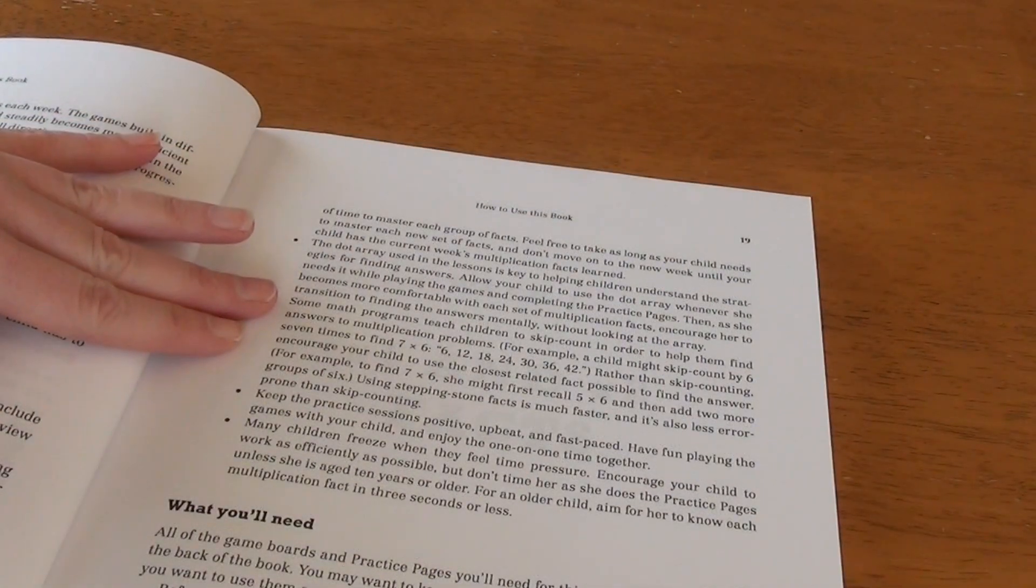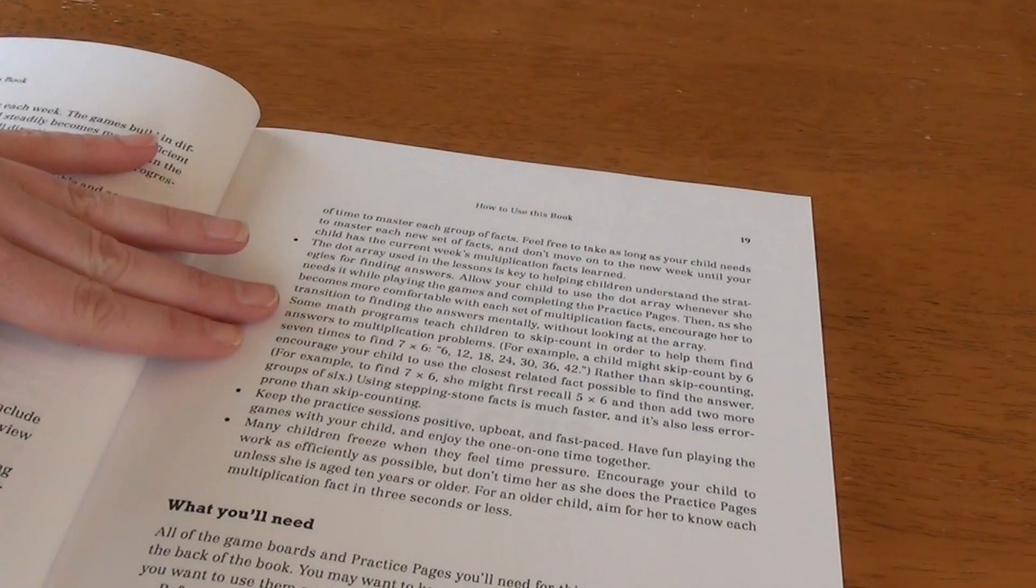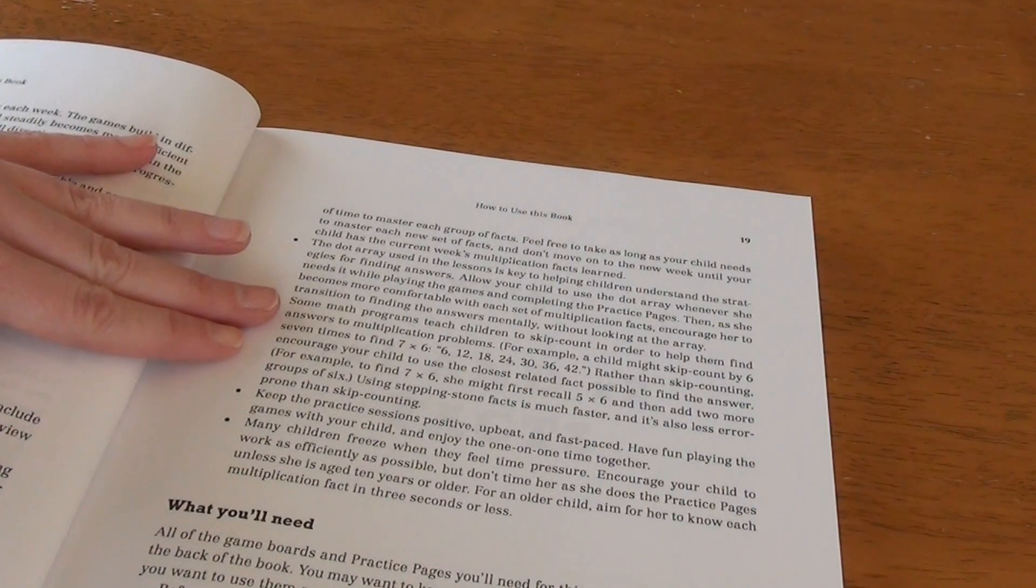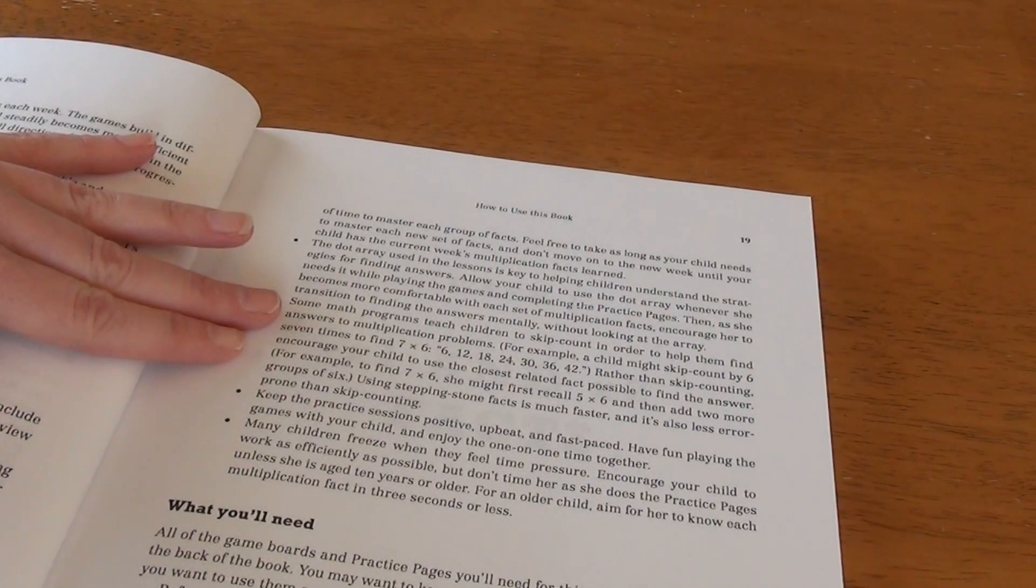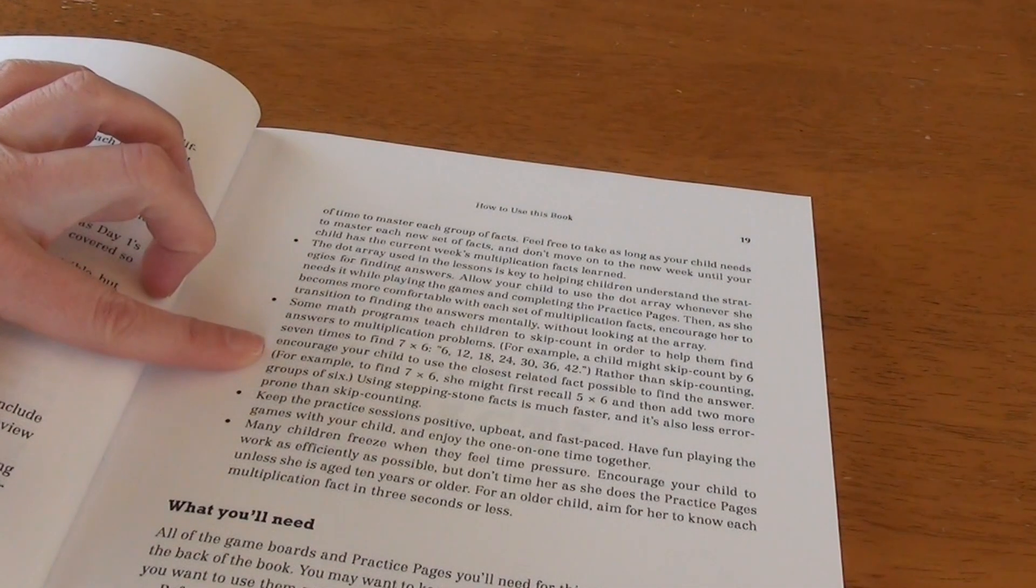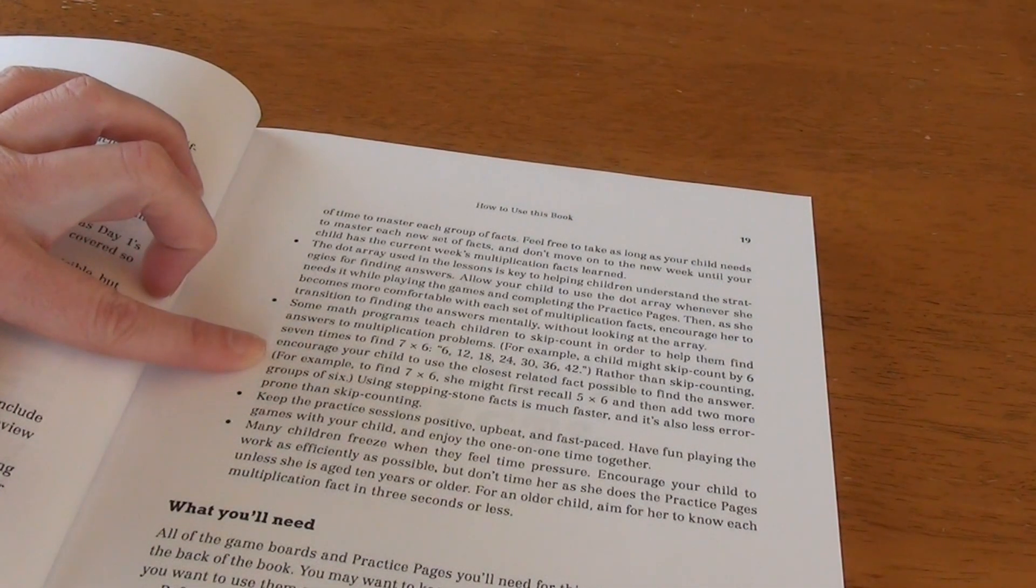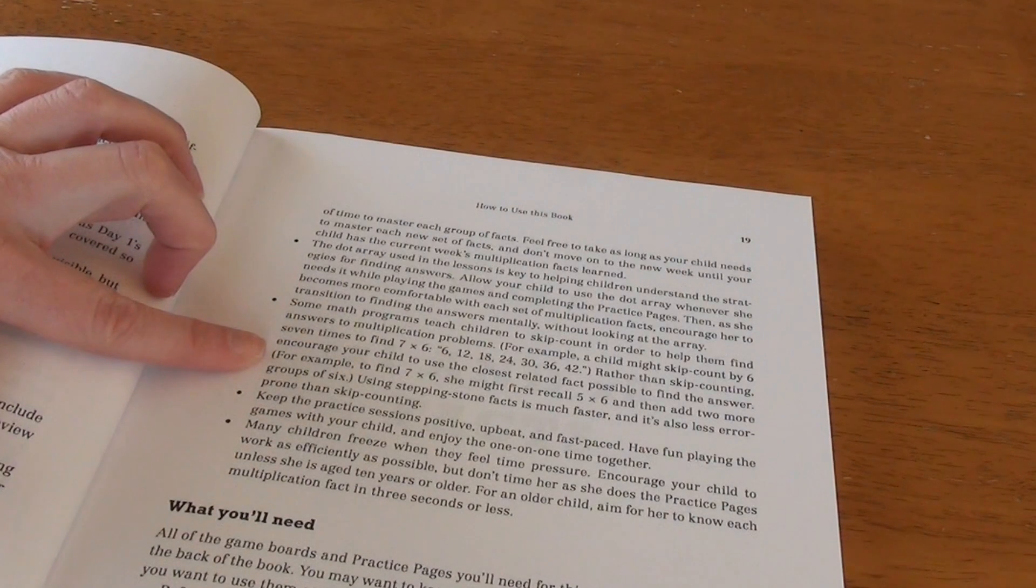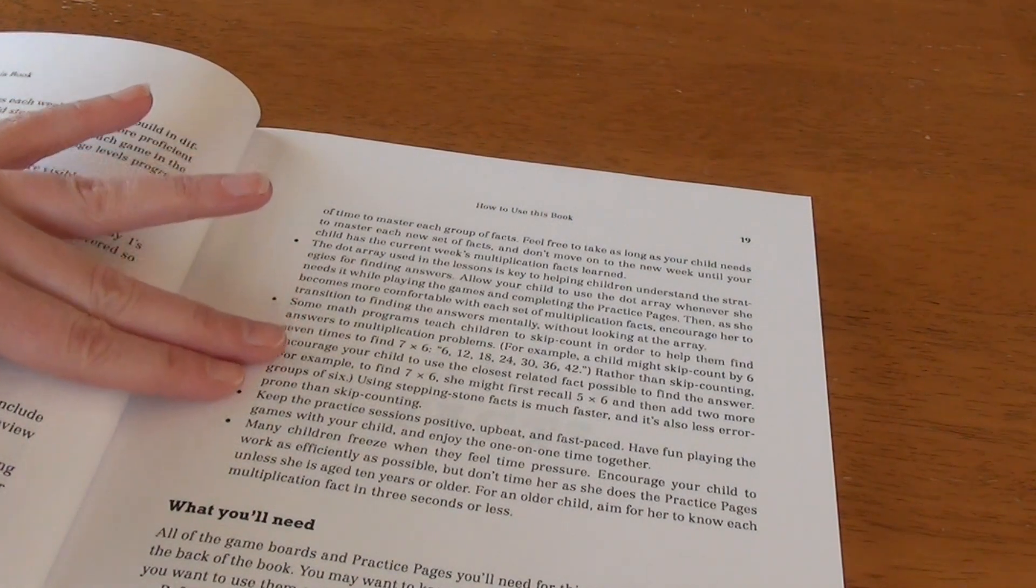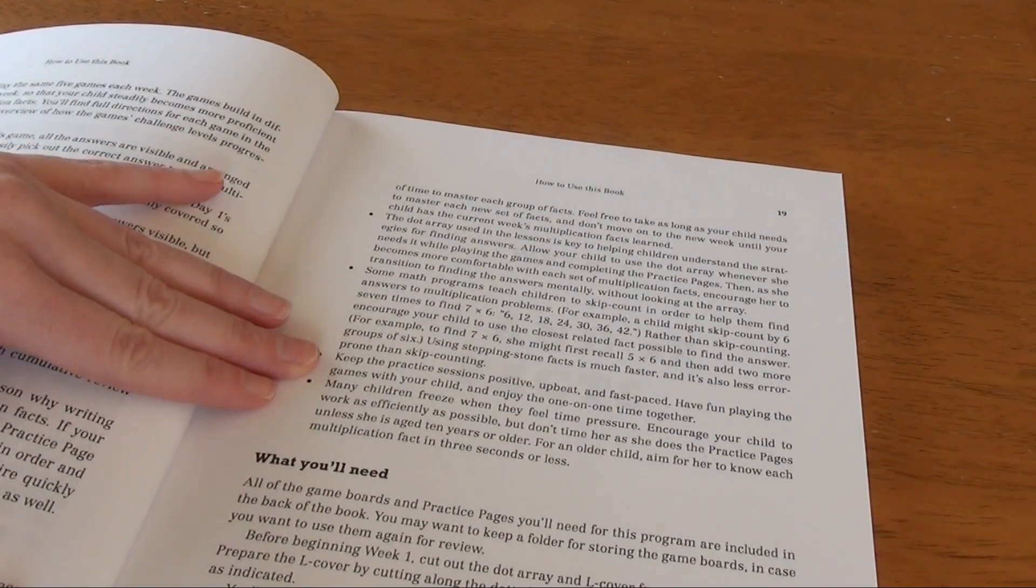Use the dot array in the lessons to help them understand the strategy as well as playing the games. Here is one of her tips where instead of skip counting, try to use the closest related fact possible to find the answer. So she says, for example, to find seven times six, she might recall five times six, and then add two more groups of six.